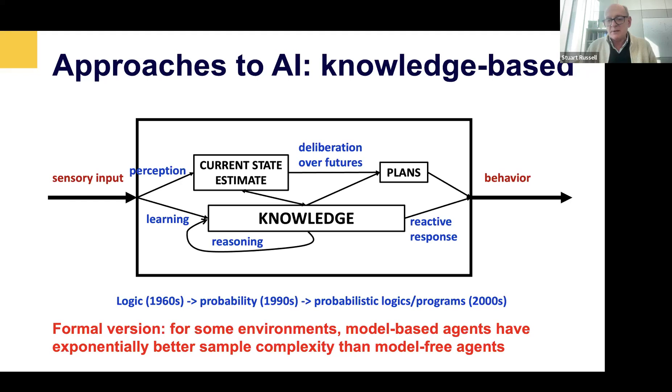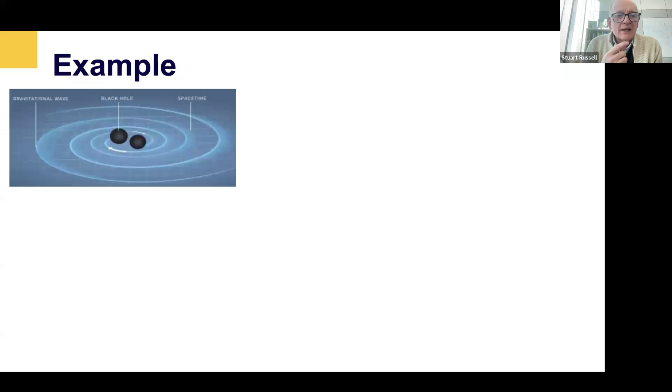So recently, I and several other researchers have been trying to actually prove from a mathematical point of view why is it that knowing things about the world and reasoning with that knowledge is a more effective way to create intelligence. The answer is that this enables you to learn effective behavior from far fewer experiences than you need if you try to learn a direct mapping. We already have theorems showing that intelligent agents built in a model-based fashion actually have exponentially better sample complexity.